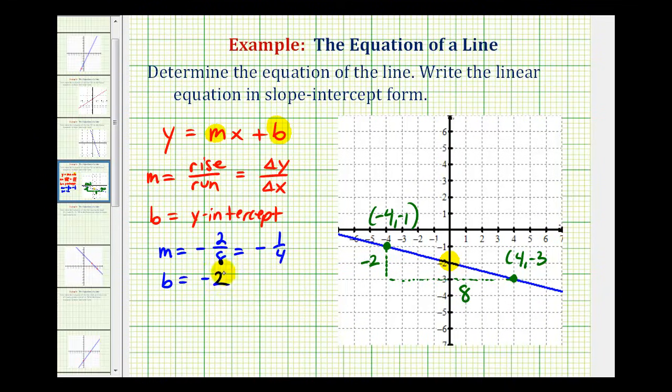This is all the information we need to determine the equation of the line in slope-intercept form. Since b equals negative two, instead of writing plus negative two, it's more common to write minus two. So the equation in slope-intercept form is y equals negative one-fourth x minus two.